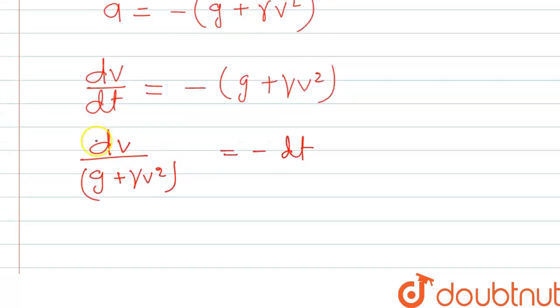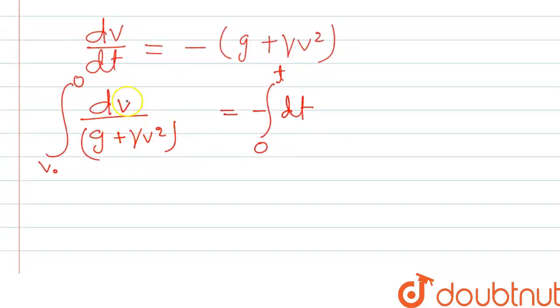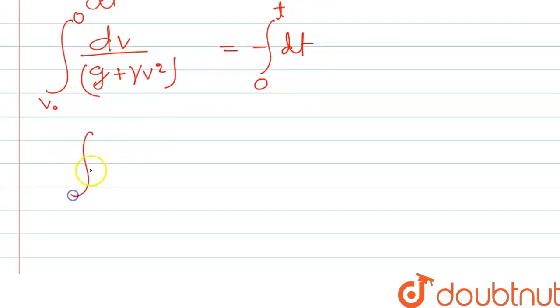Now we will integrate. The limit will be v naught initial velocity and at zenith the velocity is zero, so we can write here zero. And time, it started when t is zero and it is finishing when the time is t. And we have to find out this t. So if we write this one in standard form, we can write v naught to zero dv and root under g by gamma whole square. If I do this, then we have to multiply by one by gamma.